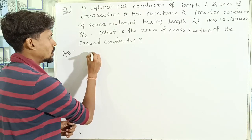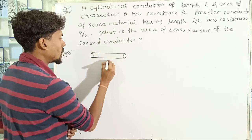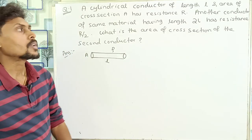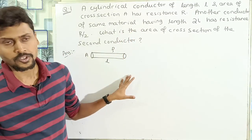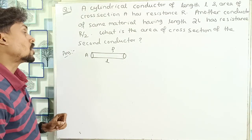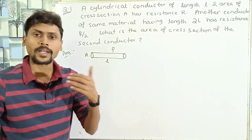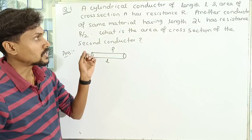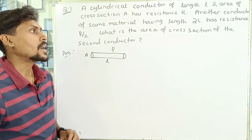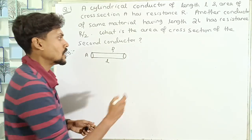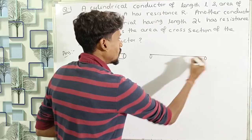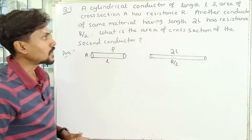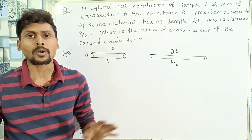Suppose we have a cylindrical conductor — length is L, area of cross section is A, and the resistance is R. The second conductor is made from the same material, so the resistivity is the same. The second conductor has double the length, 2L, but the resistance is R by 2. What should be the area of cross section of the second conductor?